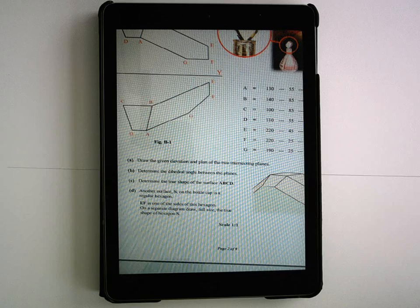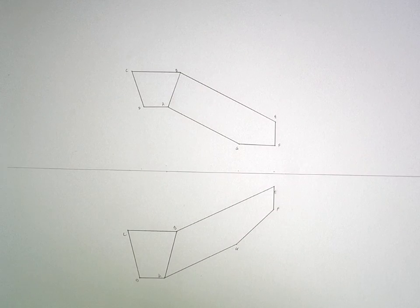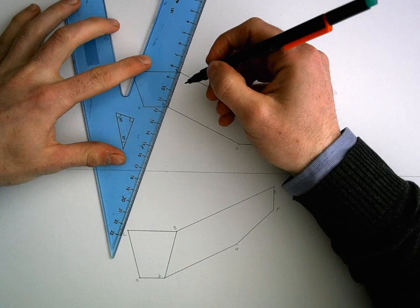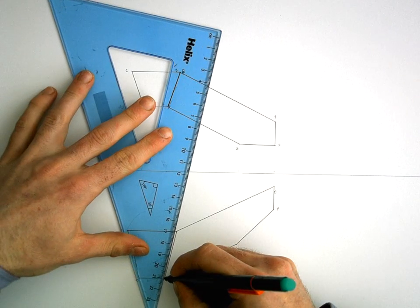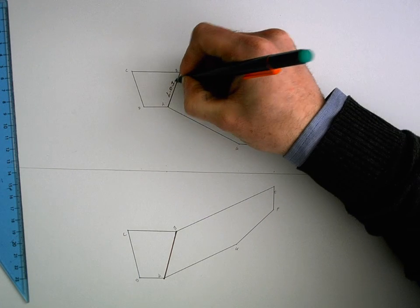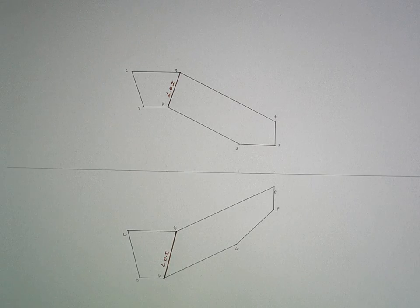The next part of the question is asking you to determine the dihedral angle between the planes. In the drawing so far, I've just set out the coordinates. This is what the elevation and plan view looks like. To find the dihedral angle between the two planes, I have to identify my line of intersection. In this case, it's the line going from A to B.